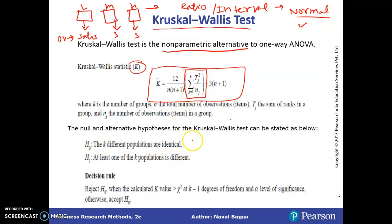So let us move on. And before I move to calculation for this portion, let us quickly have a look at the hypothesis. So H0 is the different populations are identical and H1 is at least one of the K population is different. So we will reject the hypothesis, the null hypothesis, when the calculated K value is greater than the critical value at a given level of degree of freedom. So let us quickly move to the calculation part.